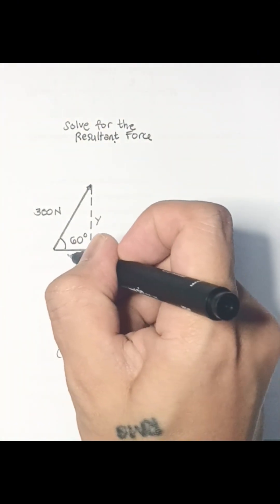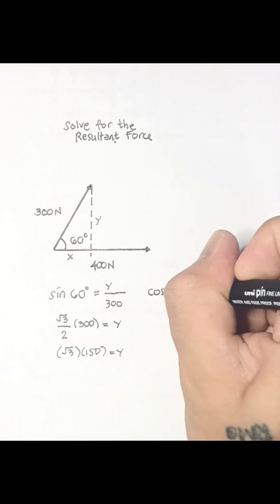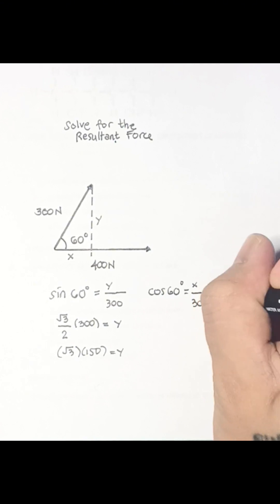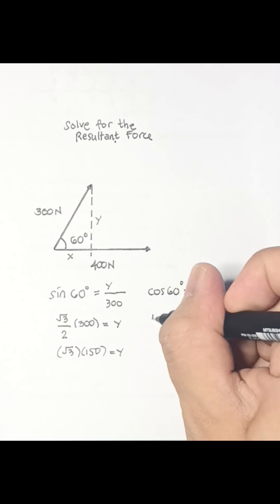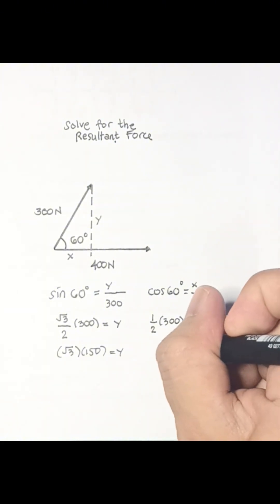We will proceed to solve for the value of x using the relationship cosine 60 is equal to x over 300 newtons. We know that the value of cosine 60 is one half, we multiply this with 300, this is equal to x, or x is equal to 150 newtons.